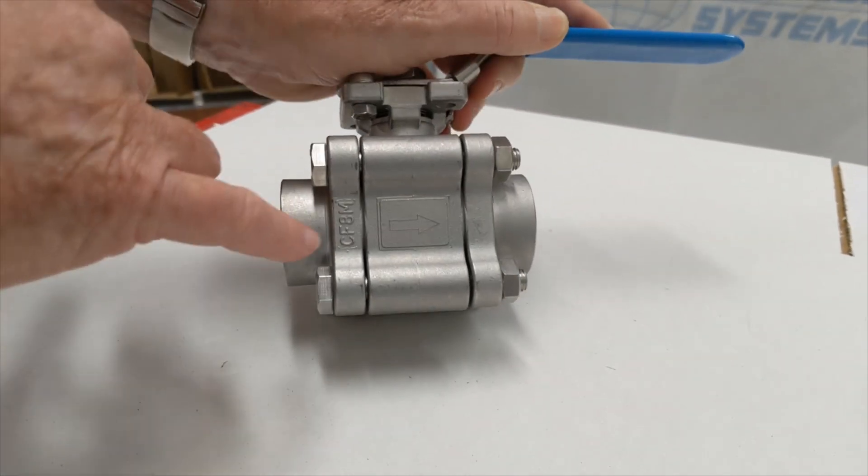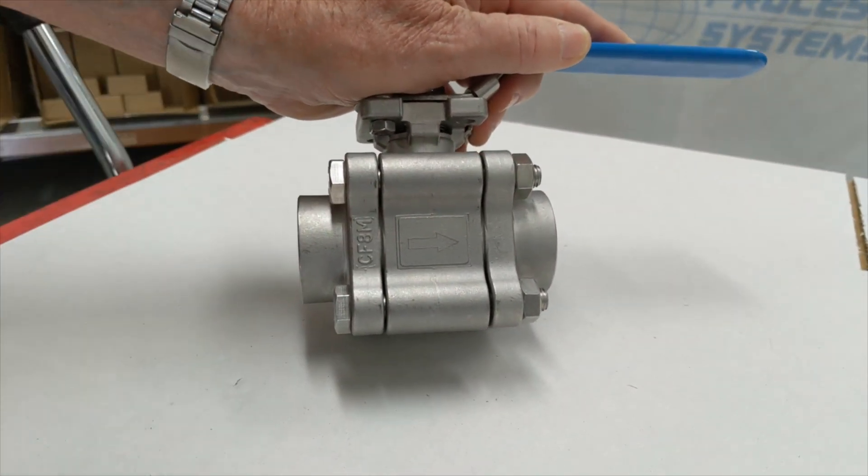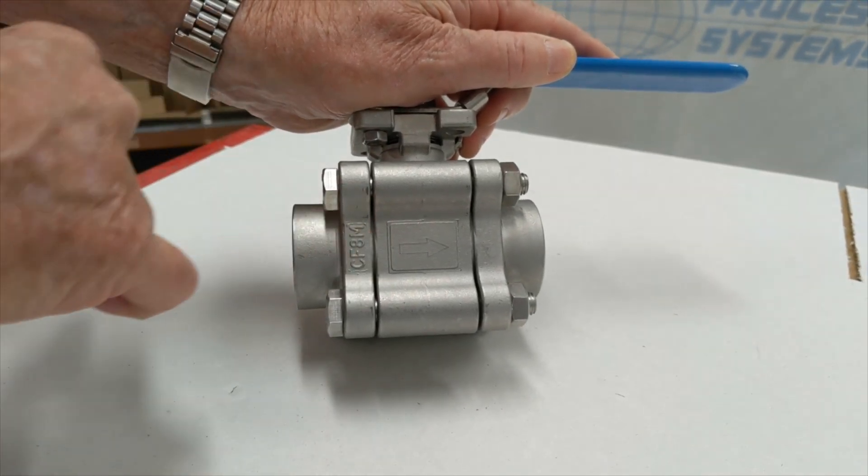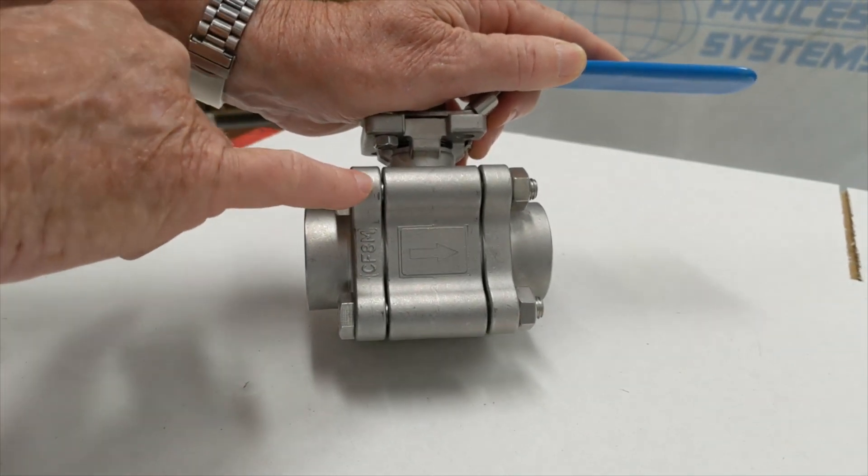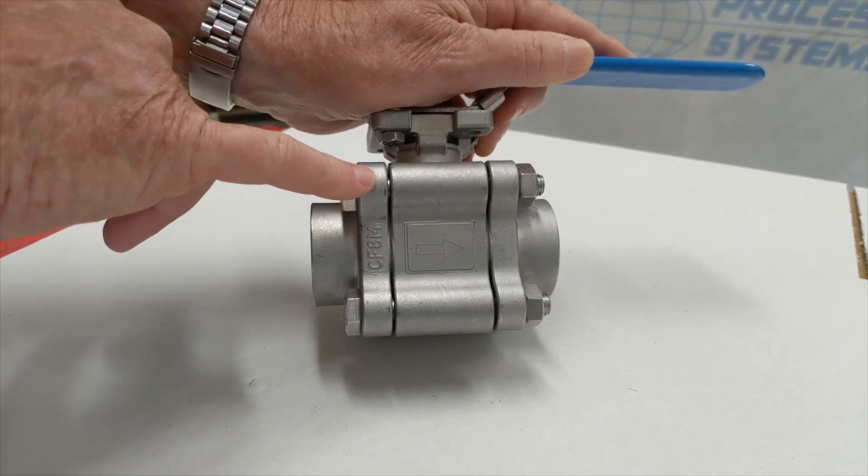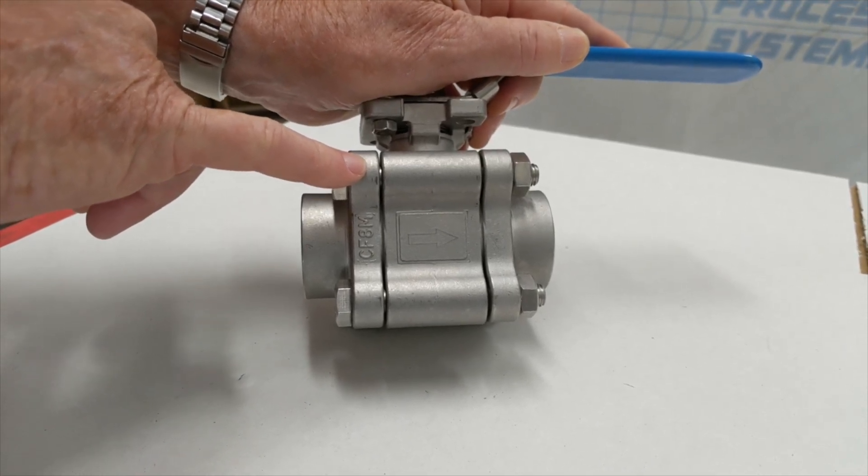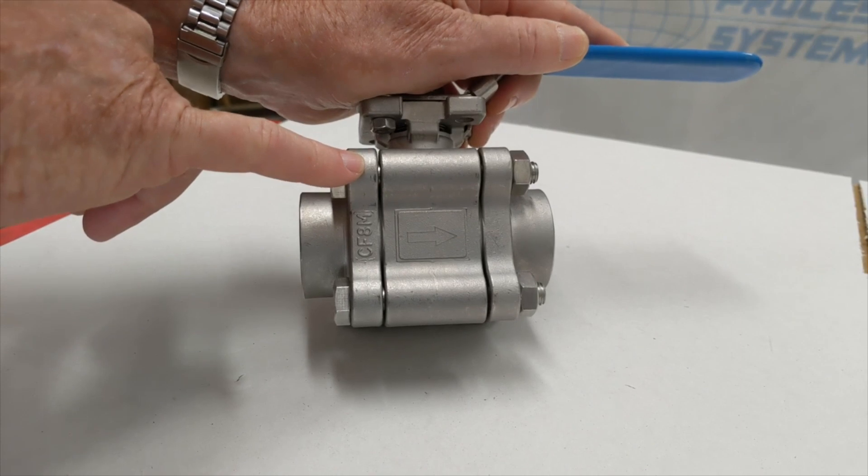It's a 40 bar valve, unidirectional. You can see the flow direction just here, the angle direction of flow. It has classification leakage to ANSI FCI 70.2 class 5.